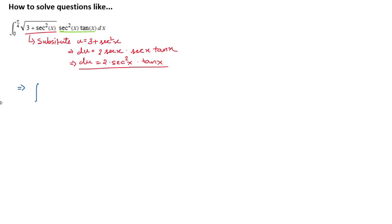When x is equal to zero up to x is equal to pi upon four, we have square root of u and if we have to have this 2 right here in this expression, one thing we can do is divide both sides by 2. If we divide this side by 2 and this side by 2, we can cancel this out. And we will have du upon 2 as secant square x tan x dx. Don't forget the dx like I did. So, du over 2.